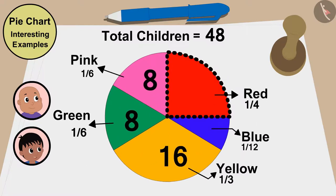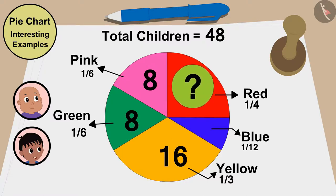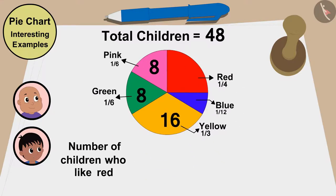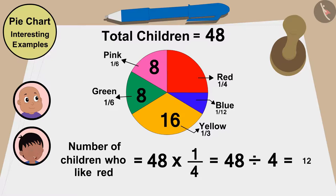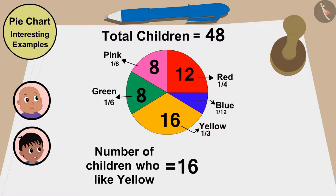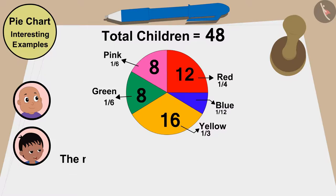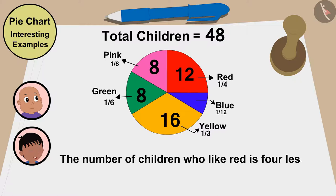Bablu, the share of children who like red is also quite large, but it is a little smaller than the share of children who like yellow. Let's find out the number of children who like red. The number of children who like red will be 48 times one fourth, or 48 divided by 4, which is 12 children. Yellow color is liked by 16 children. This means that the number of children who like red is 4 less than the number of children who like yellow.